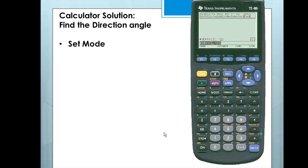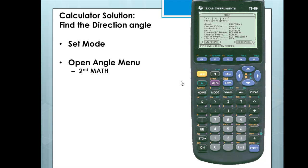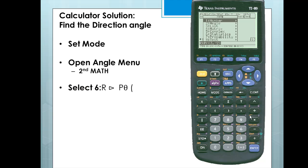Next, let's find the direction angle. We must set the mode on our calculator, so I'll press Mode, scroll down to the fourth line, scroll over to the right, and select Degree by pressing Enter. Next, we'll open the angle menu again with 2nd and Math, and we want to select option 6.